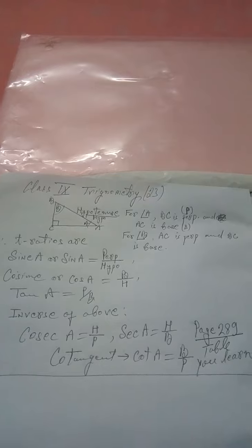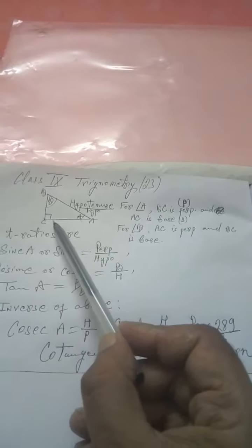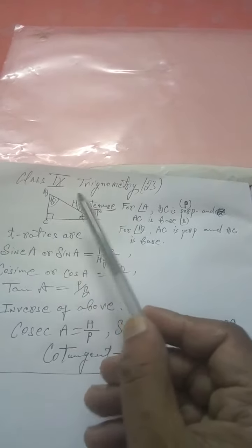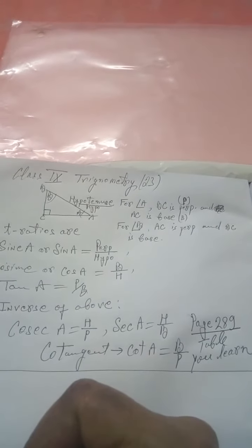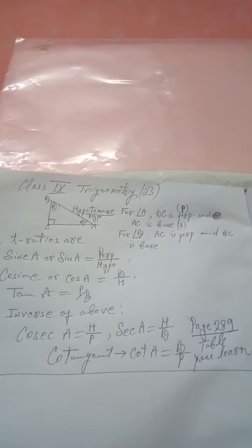Trigonometry means triangular measurement. In a triangle we have 90 degrees. Opposite to 90 degrees is hypotenuse. Then there are two other angles which are acute. So you are doing acute angles.